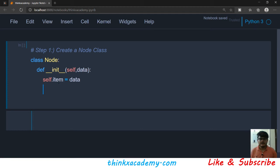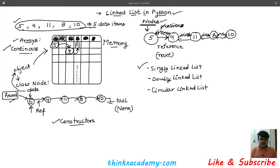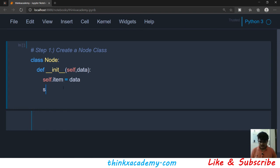We know that in a node we have data. The second important thing in a singly linked list is that a node also contains a reference. We're not specifying what the next node is yet — that gets assigned when we create new objects. We create the reference, calling it ref, and initially assign it as None, which basically means it is a null reference pointing to nothing.